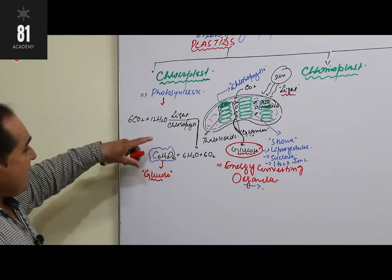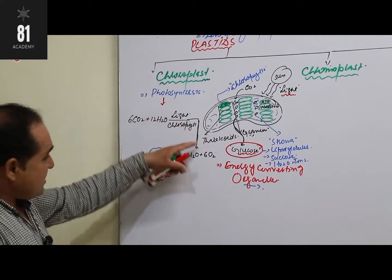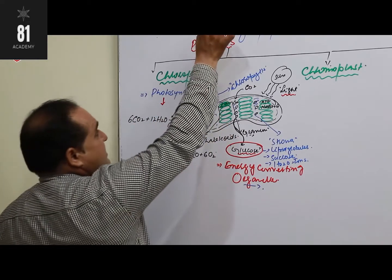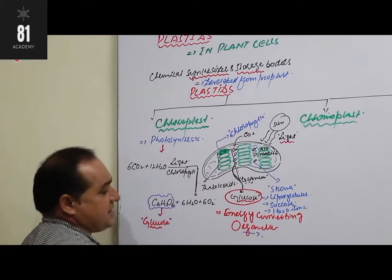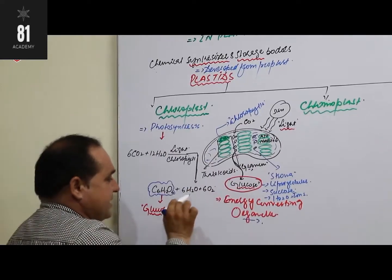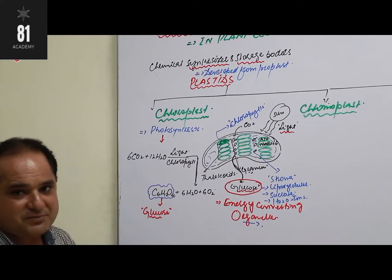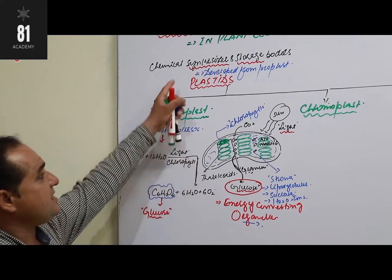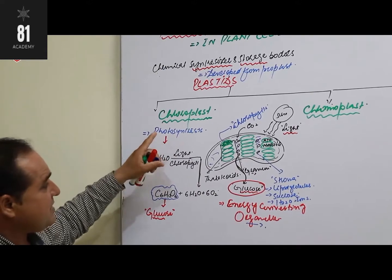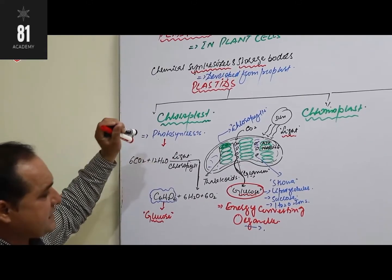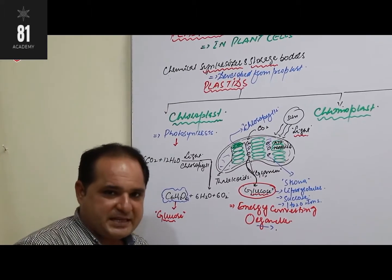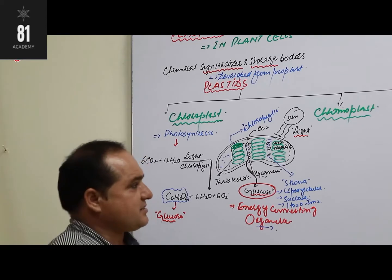That is why chloroplast is called an energy-converting organelle, and this process is called photosynthesis. So plastids are called chemical synthesizers because in chloroplast, light produces glucose, ATP, and NADPH — chemicals are being synthesized. Because of chloroplast and plastids, plants achieve autotrophic condition and become capable of preparing their own food.